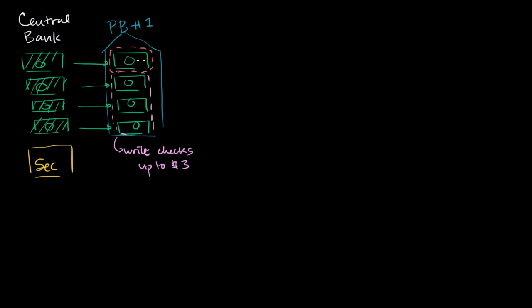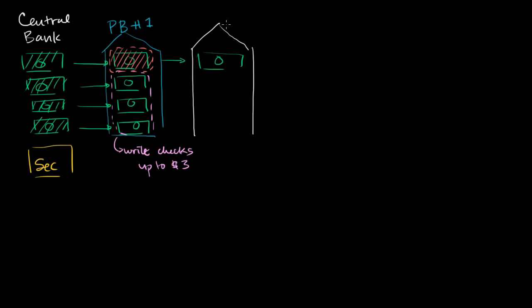There are some accounts with restricted check writing. This bank says that for the $1 in savings, it doesn't have to keep any reserves against it and could loan out that dollar. The person they lend it to immediately goes and deposits it into private bank number two — so it's no longer in private bank one. Private bank two is over here, and they deposit it into a savings account in private bank number two.